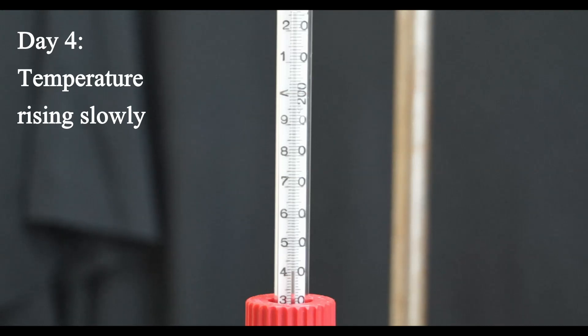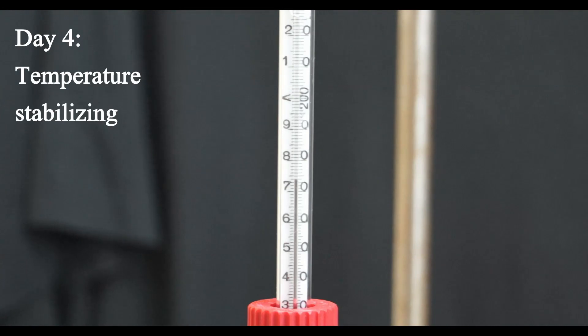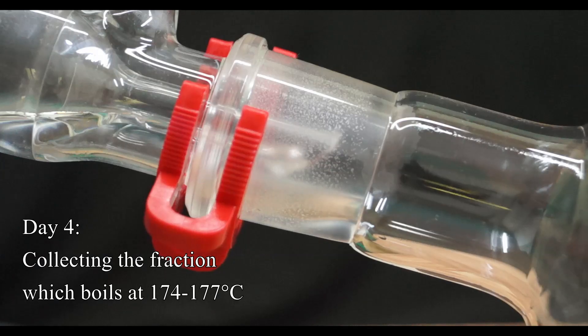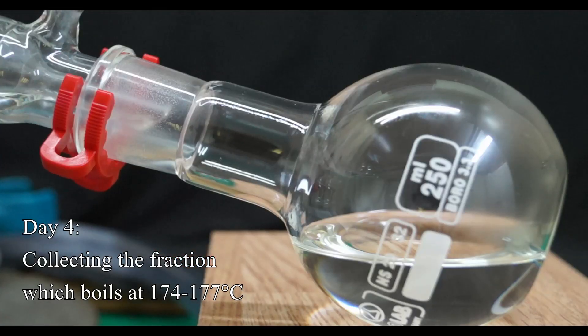I assume that at least some of that distillate is my desired product, and I regret not using a non-connected Liebig condenser for a distillation column, to achieve better separation. But finally, at approximately 174 degrees Celsius, the temperature stopped rising. I collected a small intermediate fraction, and then collected everything coming over from 174 to 177 degrees Celsius.